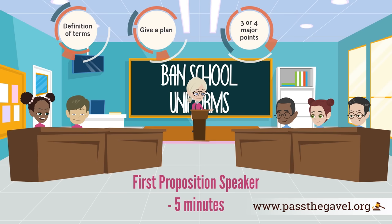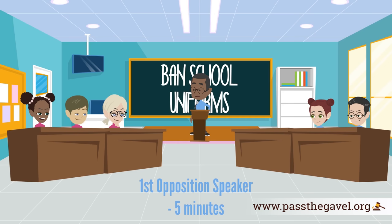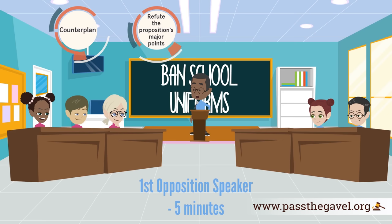The first opposition speaker speaks next, also for five minutes. As the first opposition speaker, you'll introduce yourself, give a counter plan if applicable, refute the proposition's major points, and finally present three or four arguments against the resolution backed by evidence.